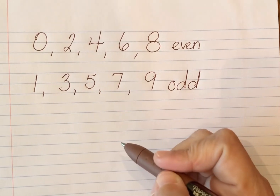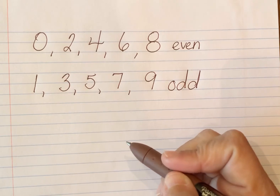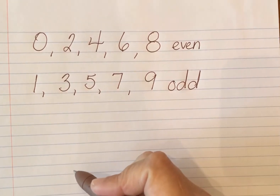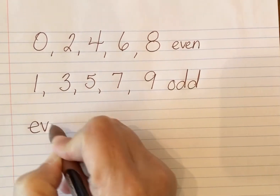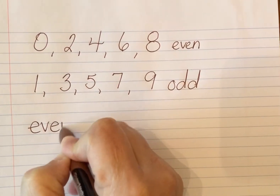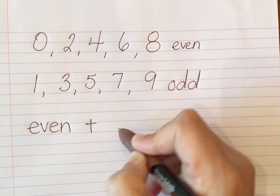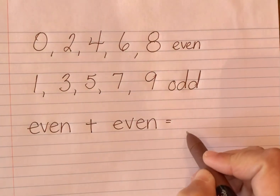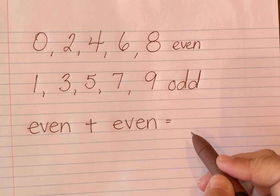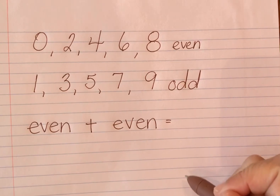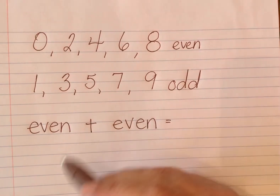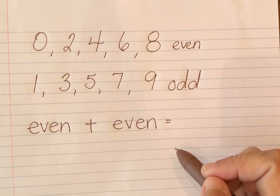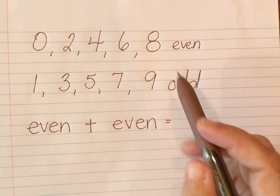Now these numbers do some interesting things when we add them — they follow certain patterns. So if we take an even number and add another even number to it, it's always going to give us either an even number or an odd number as our answer. The best way to figure this out is to substitute some actual numbers in for these words.